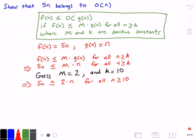So what I'm going to do is I'm going to divide both sides by n. And if I do that, then we get 5 is less than or equal to 2 for all values of n greater than or equal to 10. And that's not true. 5 is greater than 2.